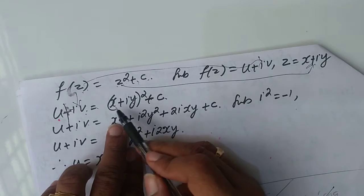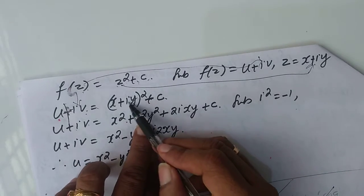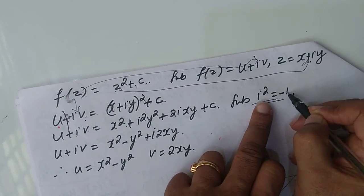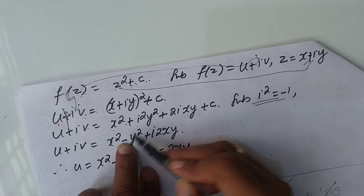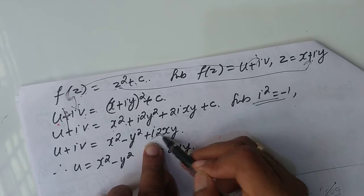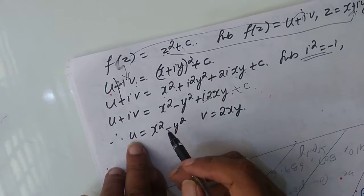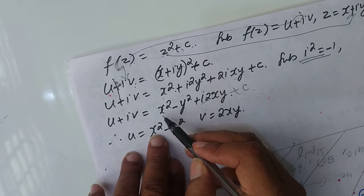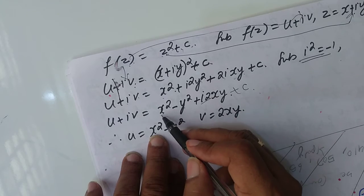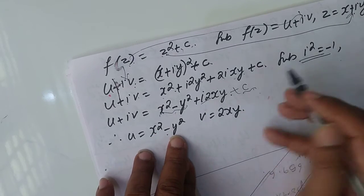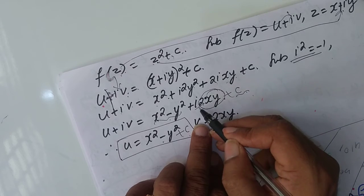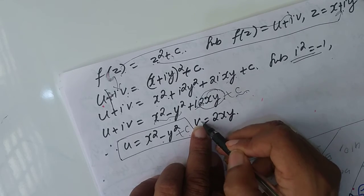Expanding u + iv = (x + iy)² + c gives x² + i²y² + 2ixy + c. Substituting i² = -1: u + iv = x² - y² + 2ixy + c. The real part (no i) is u = x² - y² + c, and v is the coefficient of i, so v = 2xy. This is how we find the imaginary part v.